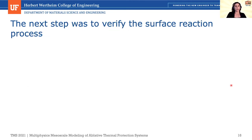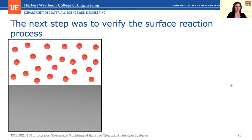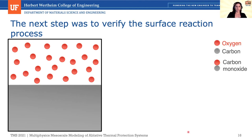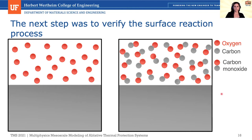The next step was to verify model behavior with a surface reaction, since oxidation of carbon fibers happens on the surface with a rate-limiting step: oxygen must adsorb, react, and products must desorb. We do not model adsorption and desorption in phase field, but we still have this rate-limiting step to incorporate. Since phase field is a diffuse interface model, and no available models included a diffuse interface, we developed our own analytical solution.